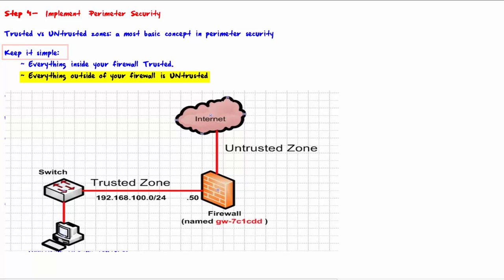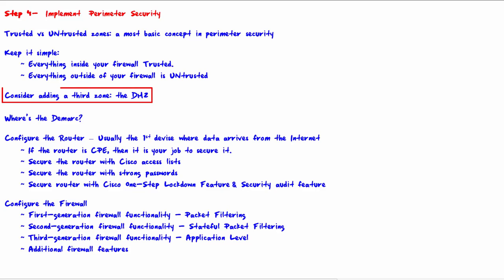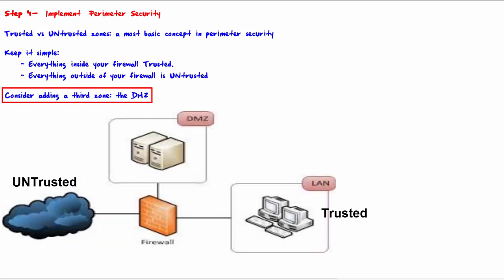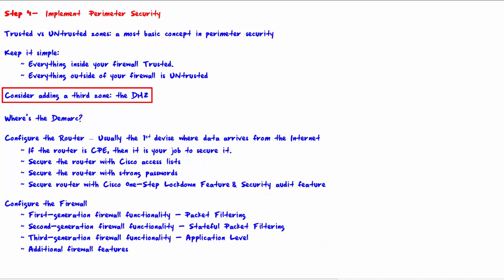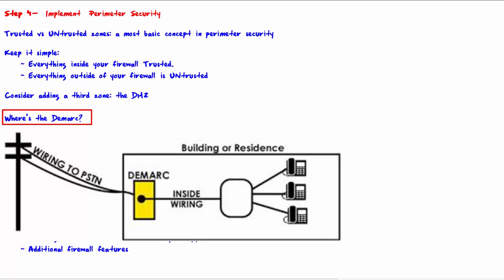Consider adding a third zone: the DMZ. The two-zone architecture is generally sufficient for SOHO (small office/home office) setups, while businesses that have servers accessible to the public may add a third zone called the DMZ and place the servers there. Because these servers may be vulnerable to attacks from the untrusted network, communication from the DMZ to the trusted zone is carefully controlled by the firewall.